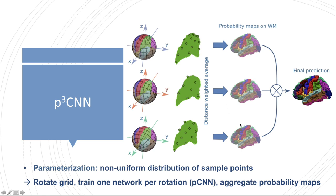After we get the probability maps on the white matter we then average them on a vertex-by-vertex basis to produce a final prediction. Because we have this view aggregation across three parameter spaces, we call this approach P3CNN.